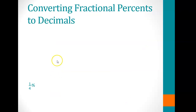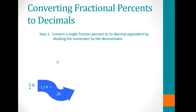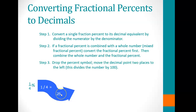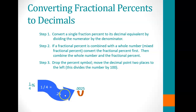What about converting fraction percents to a decimal? For one-fourth percent, we remove the percent sign, making it 1 over 4, then divide 4 into 1 to get 0.25. But remember, to go from a percent to a decimal, you move the decimal two spaces to the left, so one-fourth percent becomes 0.0025 as a decimal.